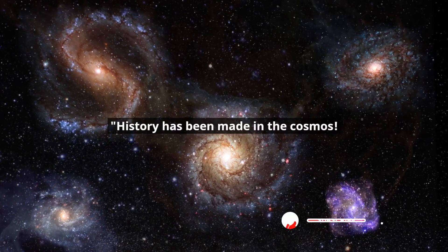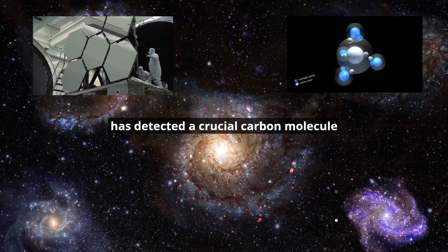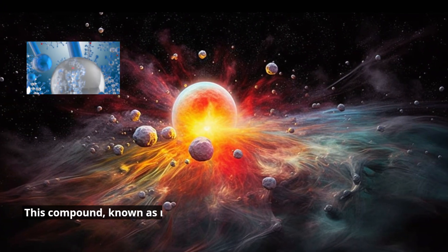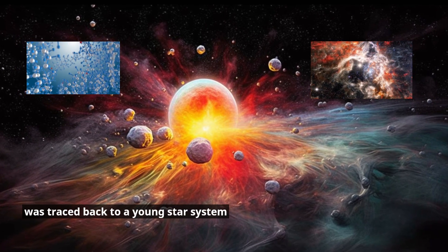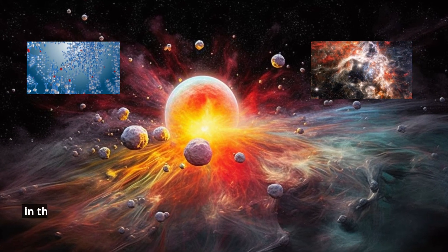History has been made in the cosmos. The James Webb Space Telescope has detected a crucial carbon molecule in space for the first time. This compound, known as methyl cation, was traced back to a young star system located 1,350 light-years away from Earth in the Orion Nebula.